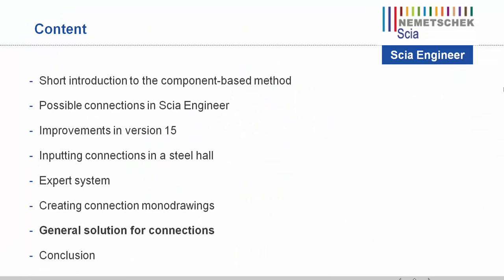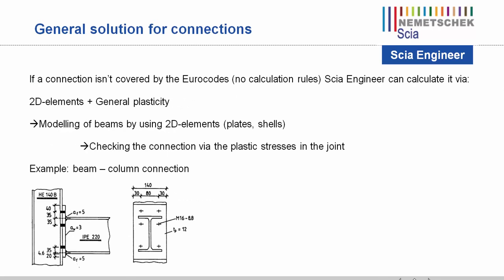The following topic is a general solution for almost every connection. SIA Engineer provides a general solution that can calculate almost any connection. We often get proposals from clients to implement certain connections not offered by the Eurocodes, which means no calculation method is available and we cannot implement them directly into our software. However, we have an alternative: by modeling the connection via 2D elements in combination with the General Plasticity module. The checking of the connection is via the plastic stresses in the joint.